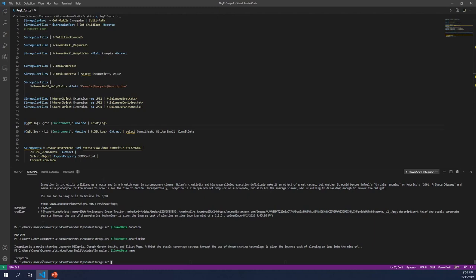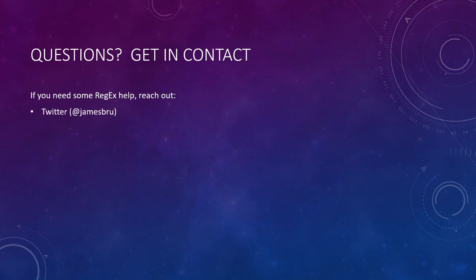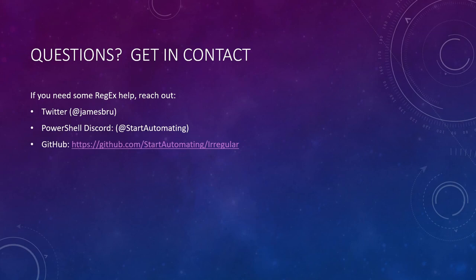If you have any questions or need some regex help, feel free to reach out. I kind of like an interesting challenge at this point because I'm a little broken. Go ahead and reach me on Twitter at @JamesBrew, on the PowerShell Discord at Start Automating. The project for Irregular is on GitHub at Start Automating slash Irregular. You can also get it from the gallery, or reach out the very old school way with email james.brundage@start-automating.com.